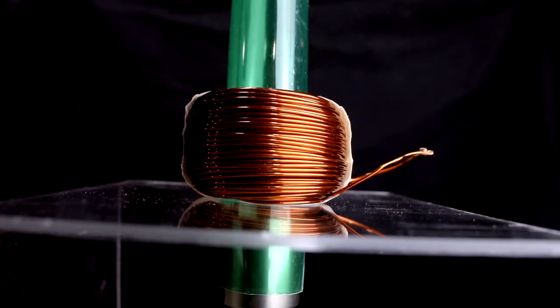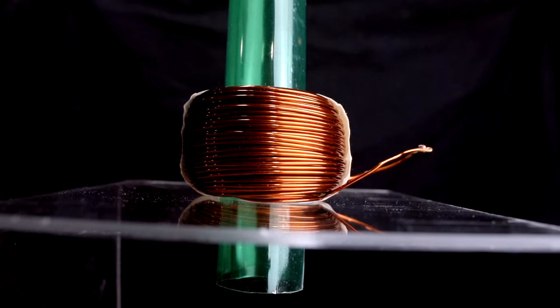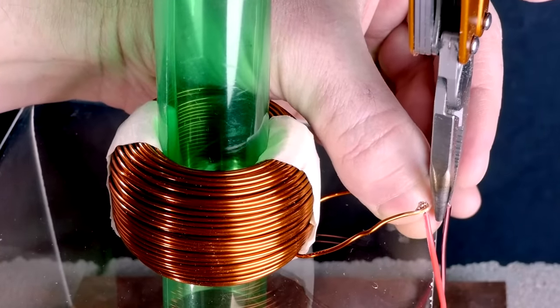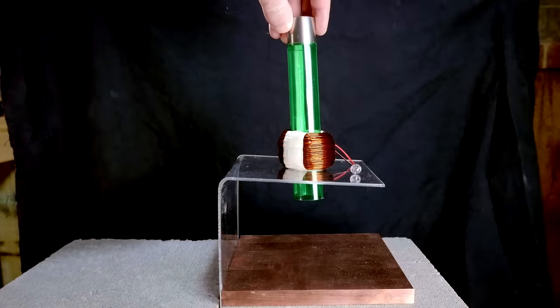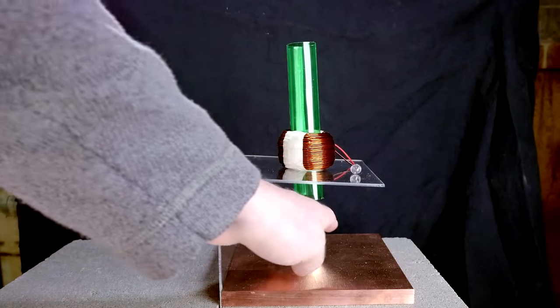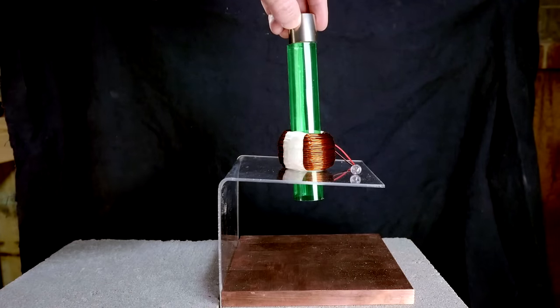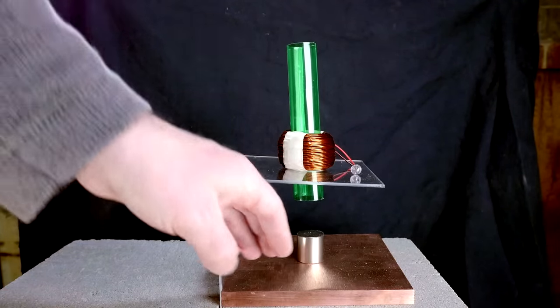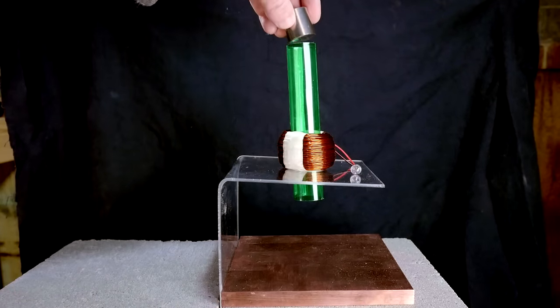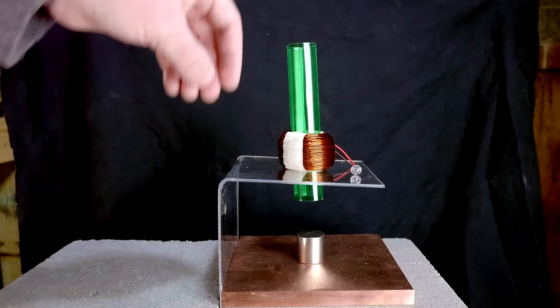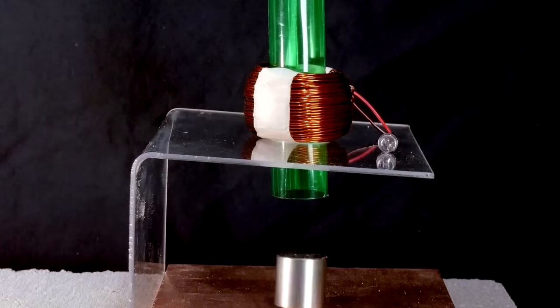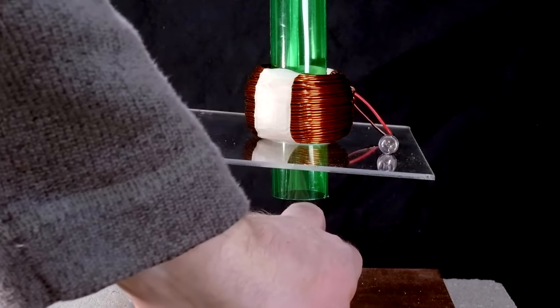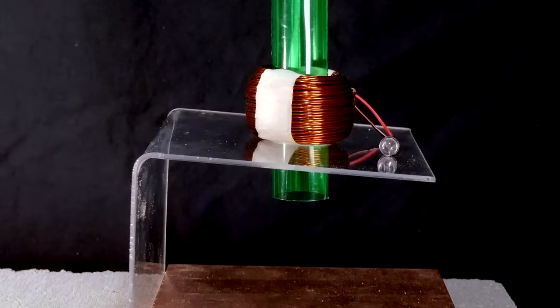If I once again disconnect the coil and bridge the circuit with an LED, we can see a better indication of the electricity. The LED is very efficient, so powering it doesn't slow down the magnet quite as much as when the circuit was closed directly. This is a simplified model of how the majority of the world's electricity is generated. There are many different types of power plants, but most of them are just trying to figure out different ways to more efficiently move magnets through coils of wire.